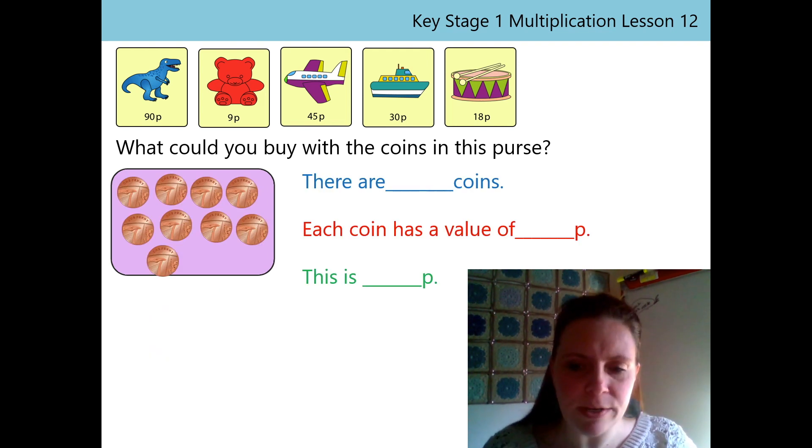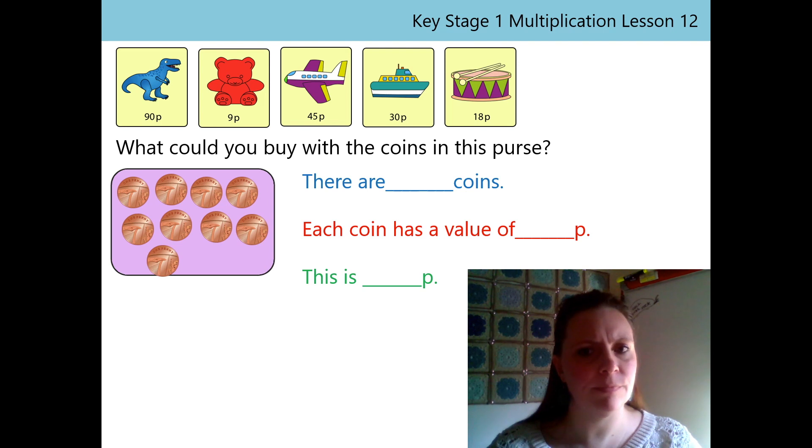I'm still not quite sure what I could buy at the moment. Let's use our stem sentences to work it out. There are... Oh, I forgot to put the number in. There are coins. How many coins are there? Oh, yeah. There are 9 coins. Each coin has a value of 1p. This is 9p. Thanks for your help there.